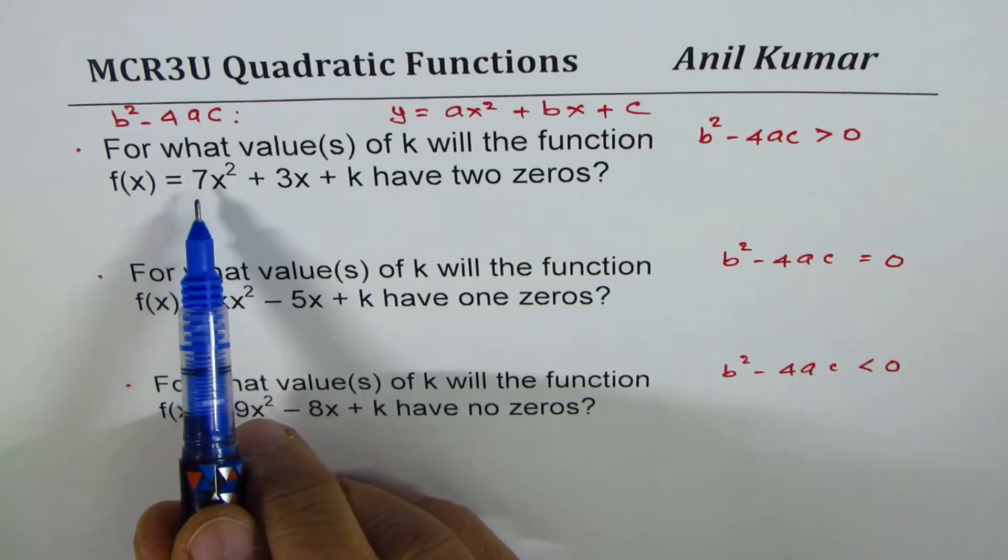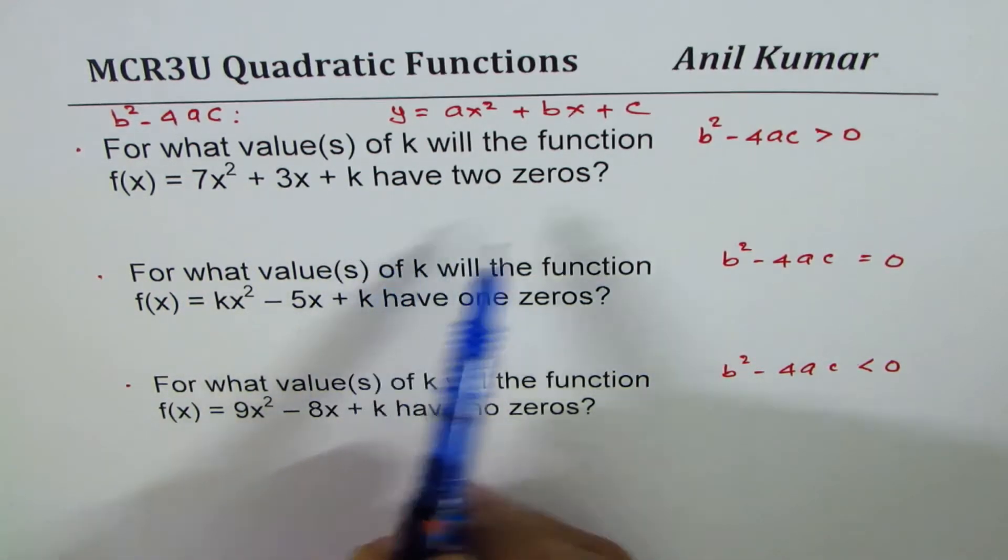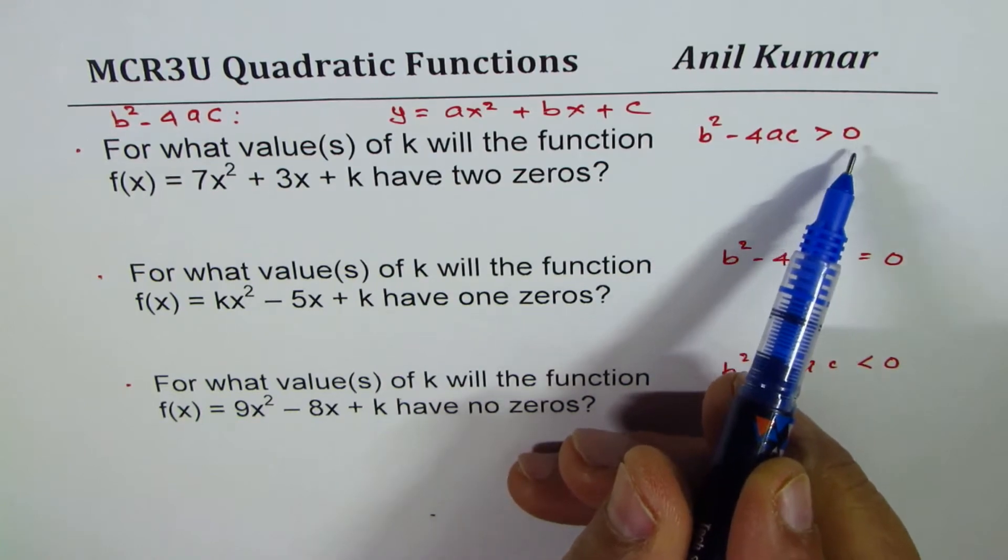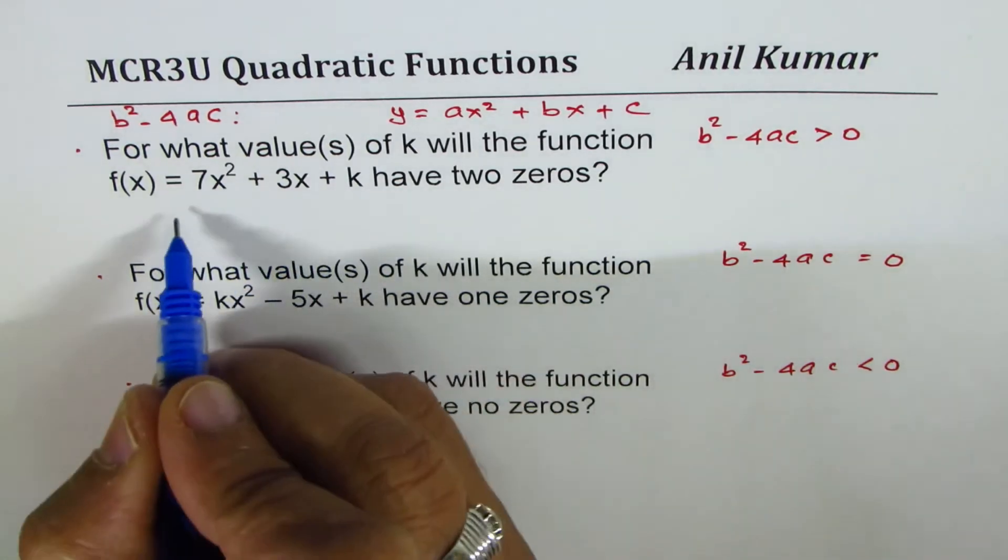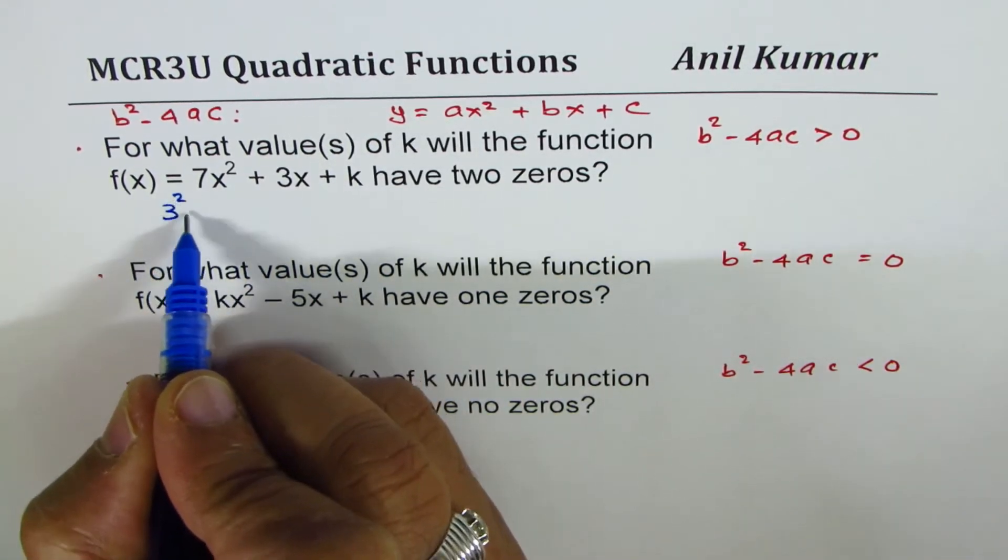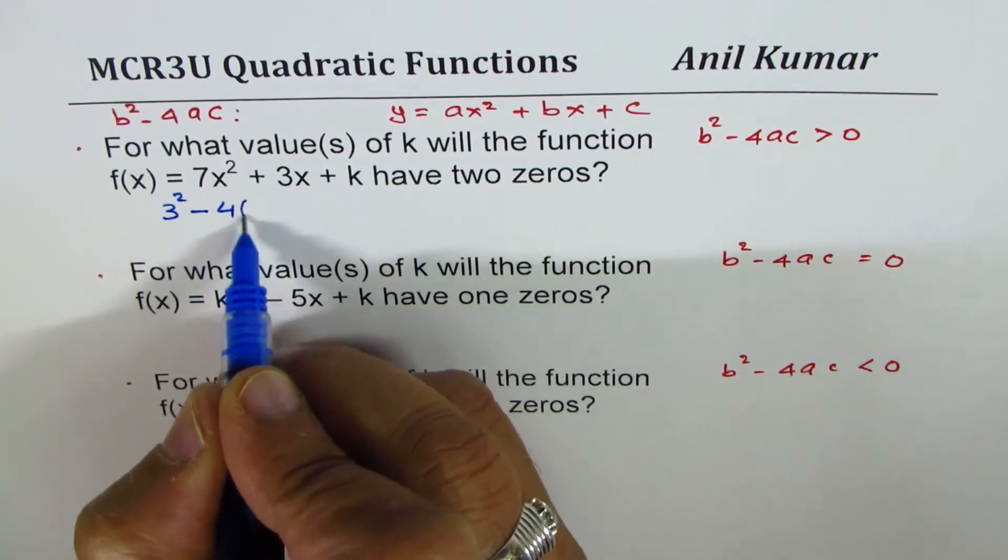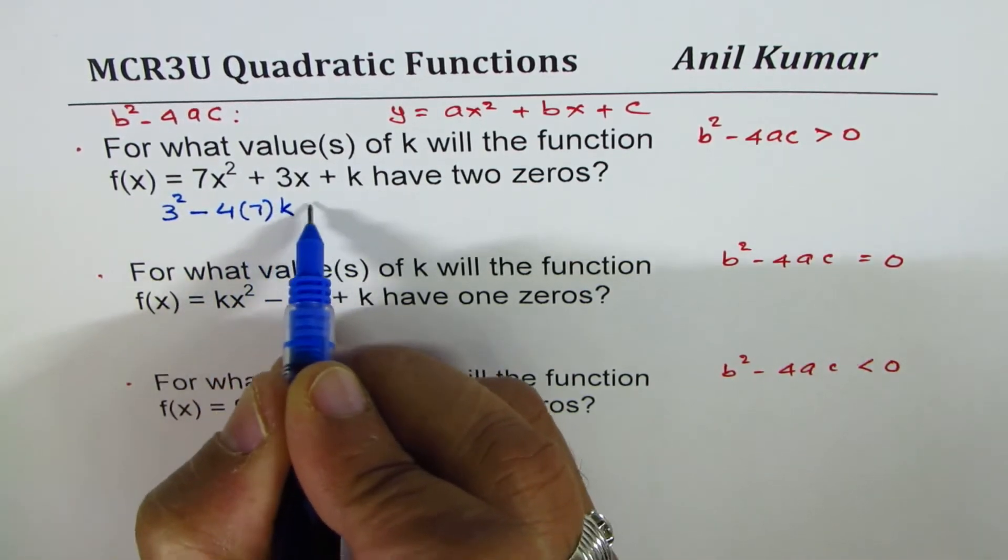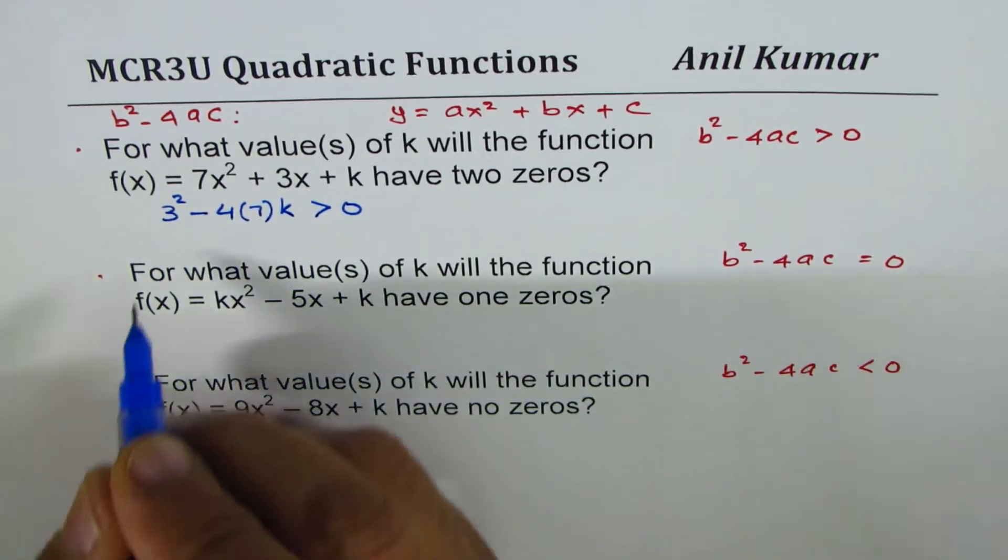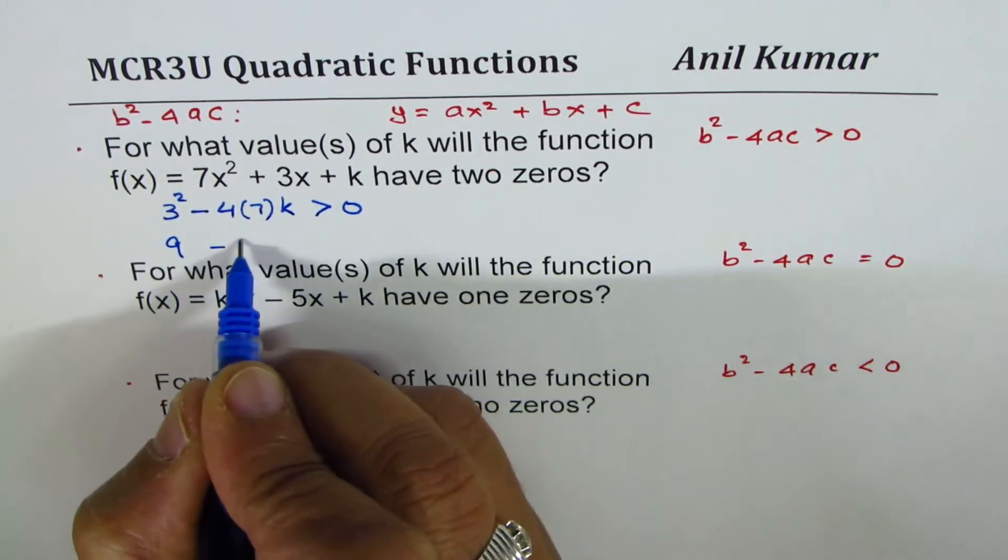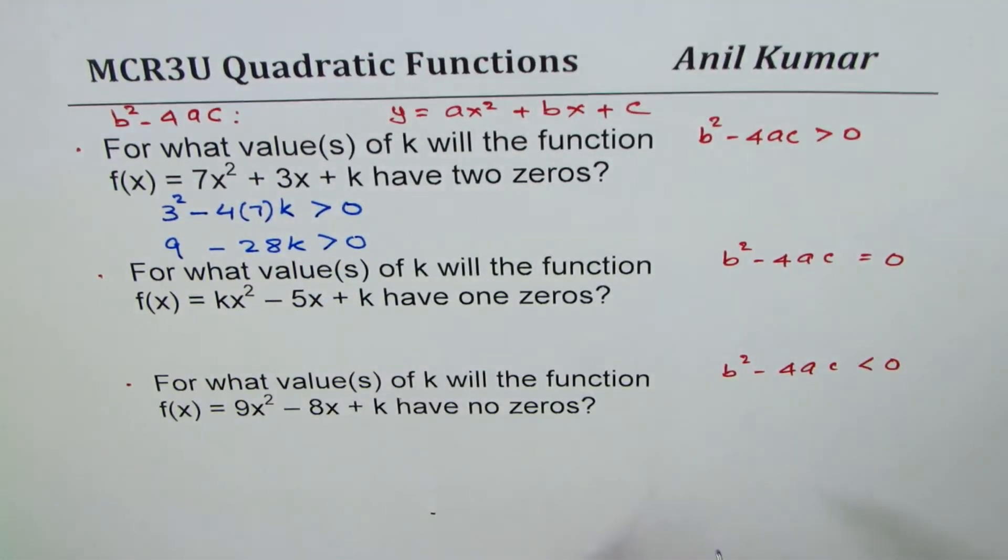So the first one here is 7x² + 3x + k. We need two zeros, so you are looking for greater than zero for the discriminant value. b is 3, so we can write down here 3² - 4 times a is 7 times k, and that should be greater than zero. So that gives you 9 - 28k is greater than zero.